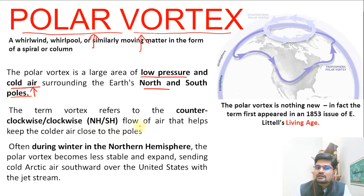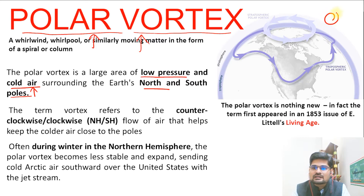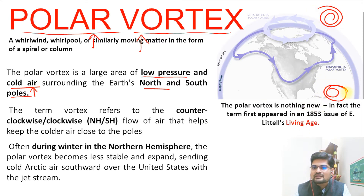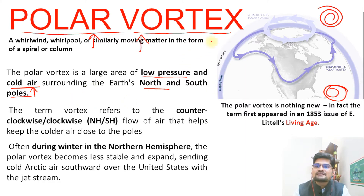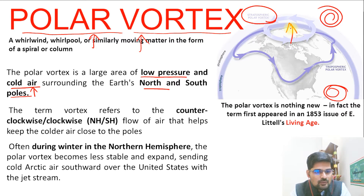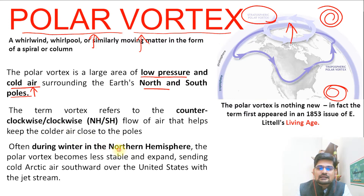The term vortex refers to clockwise or counterclockwise rotation depending upon the hemisphere — in the northern hemisphere it is anti-clockwise and in the southern hemisphere it is clockwise. This very fast wind movement happens at the poles, specifically in the stratospheric belt, that is the upper atmosphere. That is important to remember.